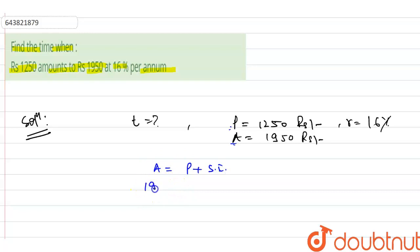So what is the amount? Amount is 1950 rupees as it is. And principal is 1250 rupees. So we will write here 1250 plus simple interest.